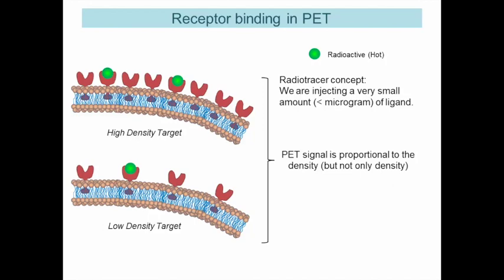Apart from FDG, there's a whole lot of targets that look at receptor binding, especially receptors in the brain. The key concept is the radiotracer principle: you inject a very small tracer amount that doesn't disturb the biological system. If you're looking at a high-density target, you expect your radiotracer to bind proportionally to the density of the target without overall changing it — assuming less than 5% of receptors are bound by the tracer. If you're looking at a low-density target, you expect less radiotracer to bind to that area.